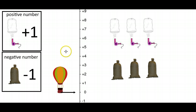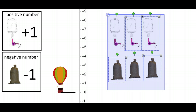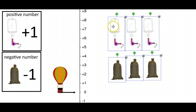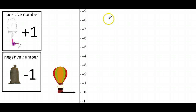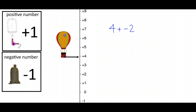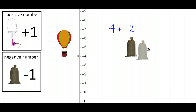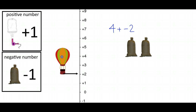Let's delete those for a moment. If I had the calculation 4 + (−2), that means my hot air balloon is at four and I'm adding on two negative things — two heavy weights, two sandbags. So my hot air balloon was at four and I've added negative two, meaning it's going to sink down.